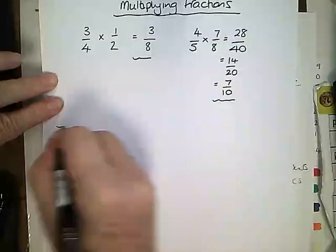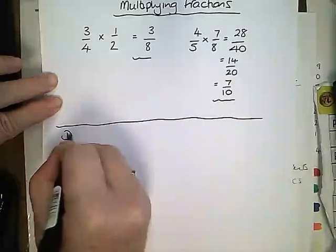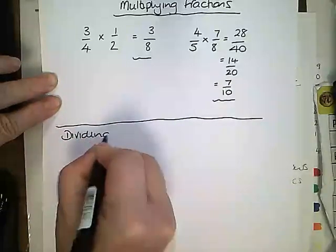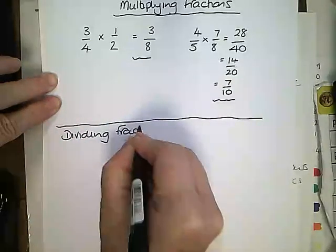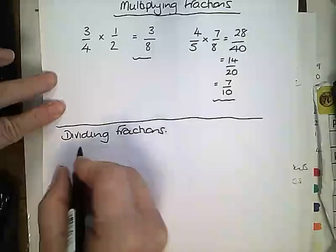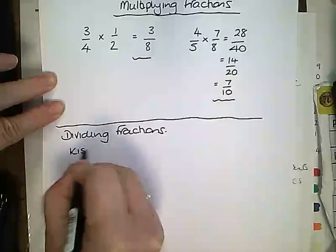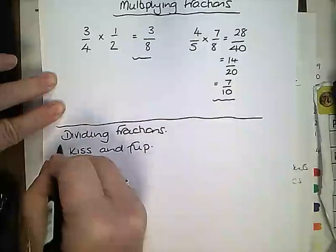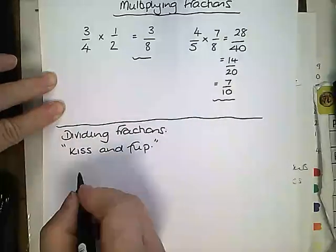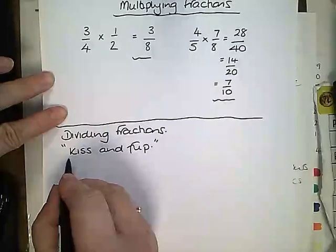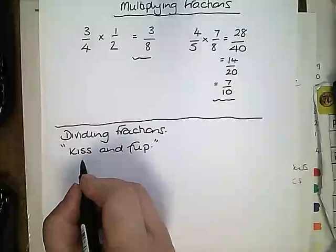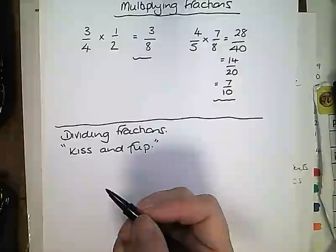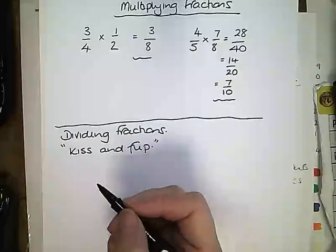When we are dividing fractions we have another rule. The rule is that we kiss and flip. We turn the divide sign into a multiplication sign which is where the kiss comes from. And then we flip or turn upside down the second fraction.